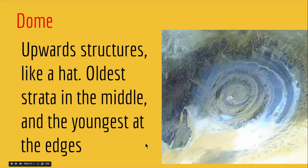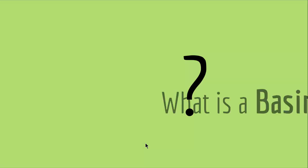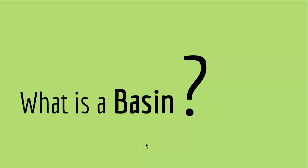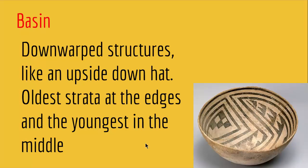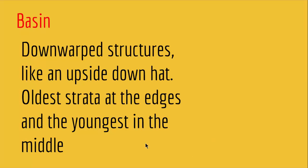The exact opposite of domes is something called a basin. A basin is a downward structure like an upside-down hat where the oldest strata is at the edges and the youngest is in the middle. Imagine rock stratas going downward in the middle and coming up at the edges — in the middle you have your youngest strata and on the edges you have the oldest — creating something like an upside-down hat or a bowl. This is called a basin and it is a type of folding.